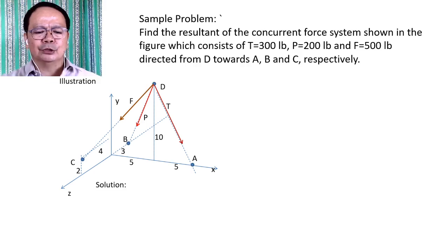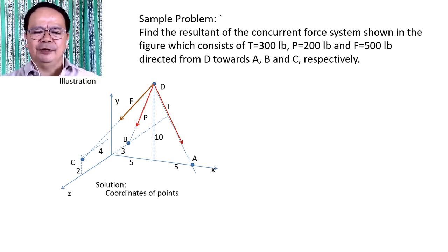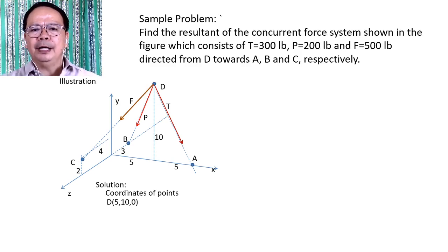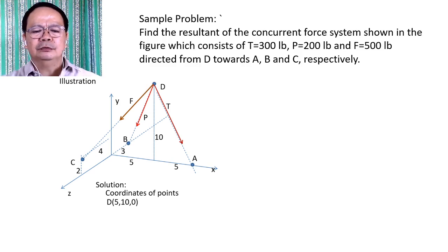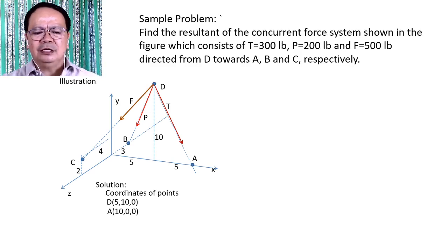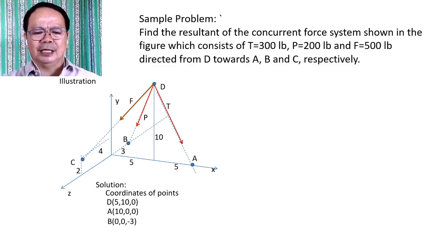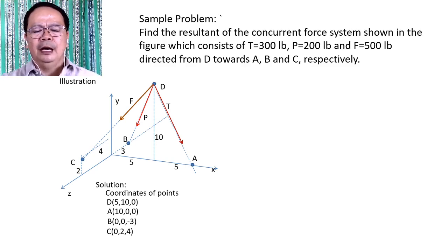Now let us have our solution. The first thing we should do is find the coordinates of the given points. From the figure, we can define point D at coordinates (5, 10, 0), point A at coordinates (10, 0, 0), point B at coordinates (0, 0, -3), and point C at coordinates (0, 2, 4).